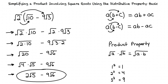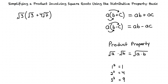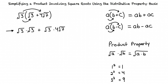Let's do one more example: multiply the square root of 3 by the square root of 3 plus 4 times the square root of 7, and simplify your answer as much as possible. We start by using the distributive property to multiply the terms together. This results in the square root of 3 times the square root of 3, plus the square root of 3 times 4 times the square root of 7.